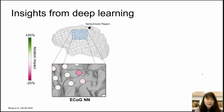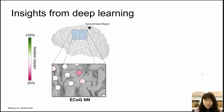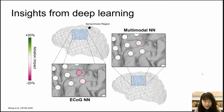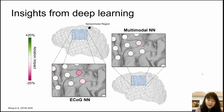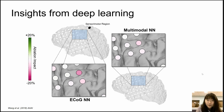Additionally, we did an ablation test to see which electrodes mattered most for predicting future movement. We found that the sensorimotor region, consistent with previous literature, is what's driving most of the prediction results. What's even more interesting is that compared to the single-modality ECoG network, the multimodal network has less ablation impact — it stays relatively accurate, whereas the single ECoG network shows a very large decrease in accuracy when those important electrodes are ablated. So somehow, the video was able to compensate for this ablation.